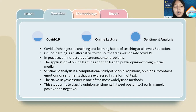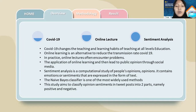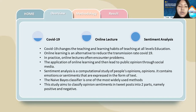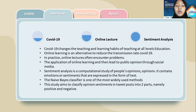In practice, online lectures often encounter problems in the application of online learning, and this leads to public opinion on social media such as Instagram, Twitter, and Facebook as a form of expression in response to the implementation of online lectures. Data show that Twitter is one of the media that still exists compared to other social media because it provides the latest information that is widely discussed.